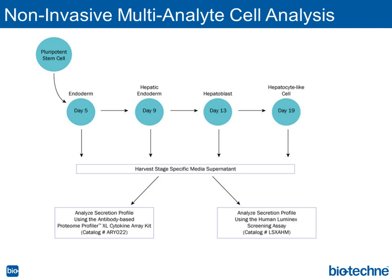That workflow is shown in this slide. This is a non-invasive method to analyze the cells. We take a pluripotent stem cell, differentiate them into hepatocyte-like cells or whatever cell of interest, and then harvest the cell culture media at key stages of the developmental progression — definitive endoderm, hepatic endoderm, hepatoblast, and finally hepatocyte-like cells. We can take that media from the same dish so we're able to continue the cells in culture and continue monitoring how their secretion profiles are changing. We can then analyze them using two methods: our Proteome Profiler XL cytokine arrays, and then the Luminex assays.